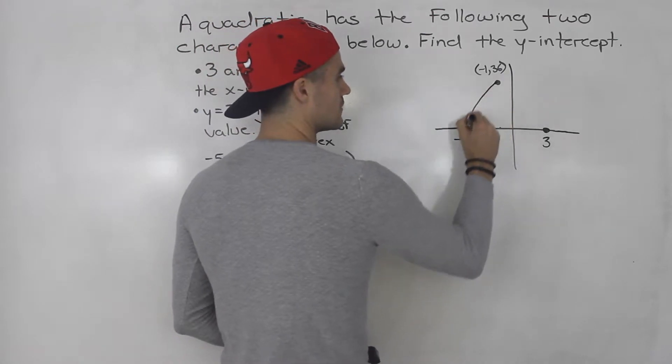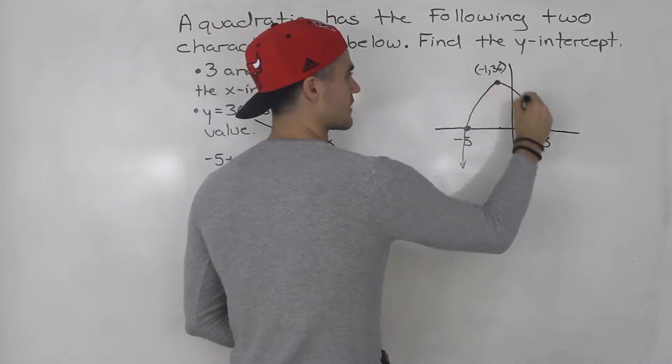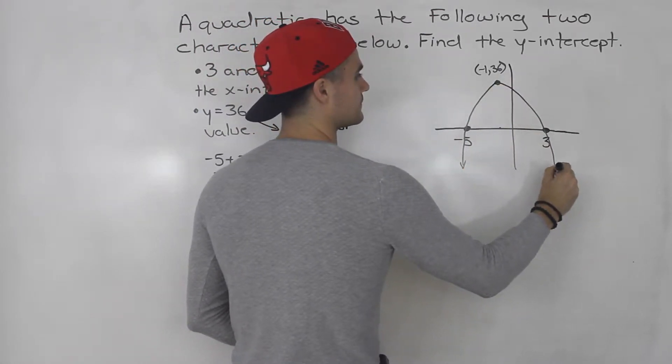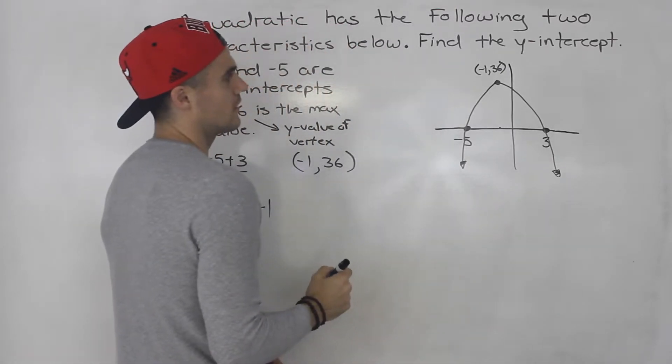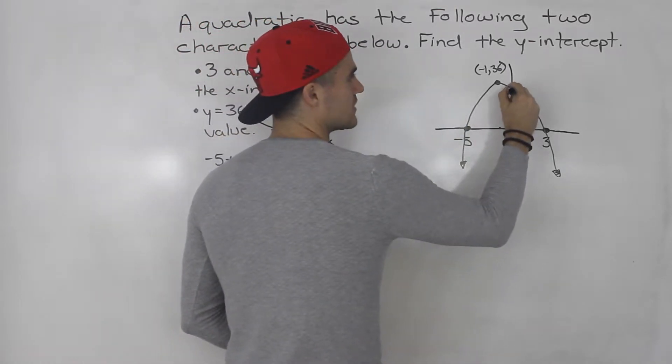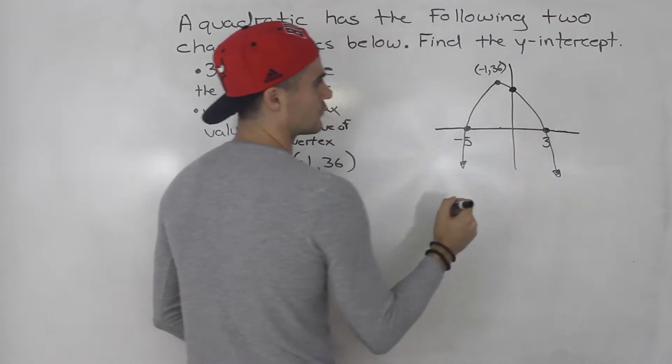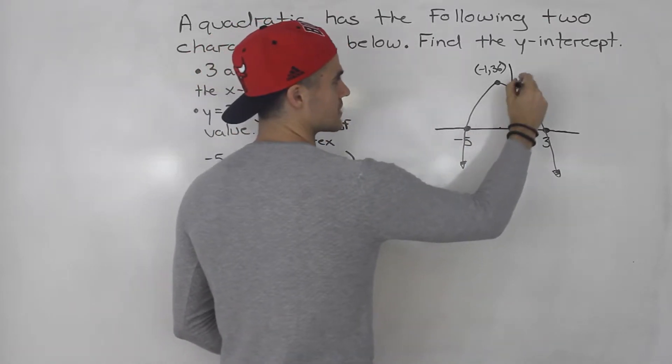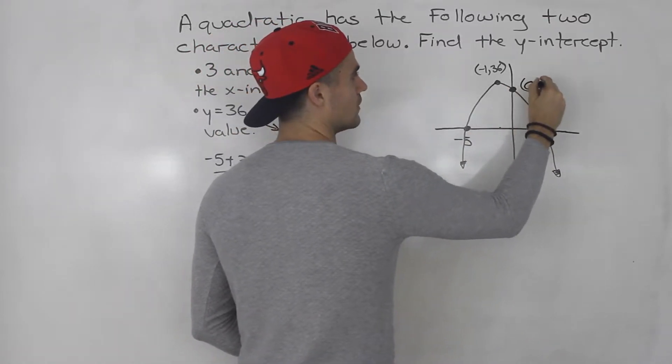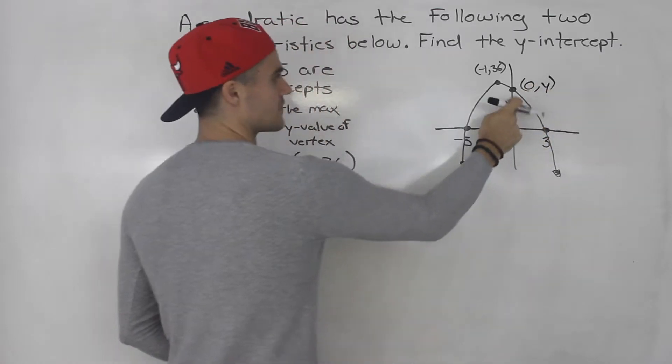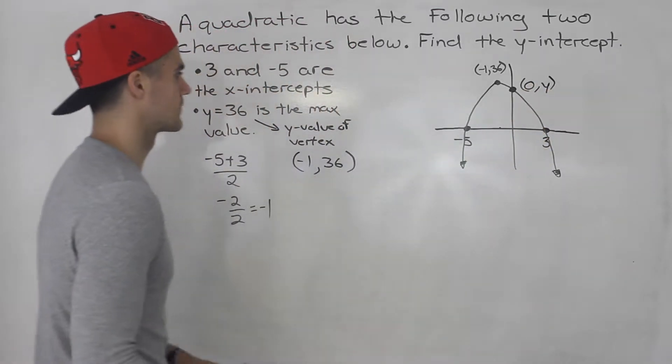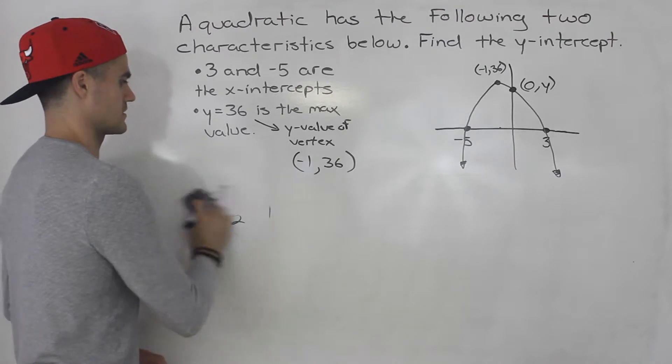And from here, we just have this quadratic like that, right? And we're looking for this here. We're looking for the y-intercept, and we know this y-intercept is going to have a coordinate zero and some kind of y-value. The x-value is going to be zero. So, how can we find that?